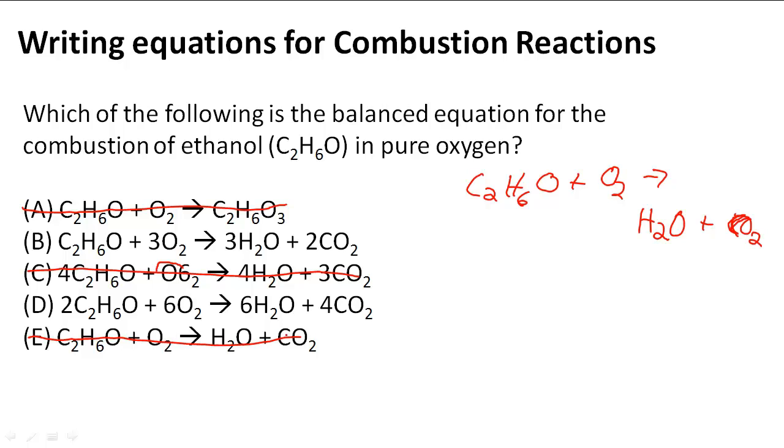So E is out of the running. Now we're left with B and D. We have to check which one is correctly balanced. So what you have to do is count the atoms on both sides.